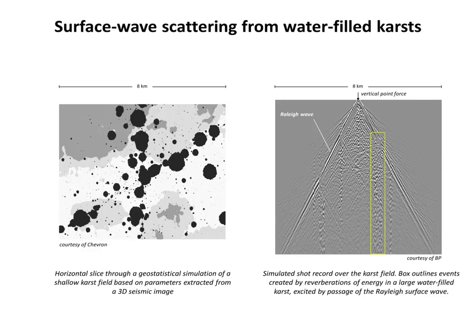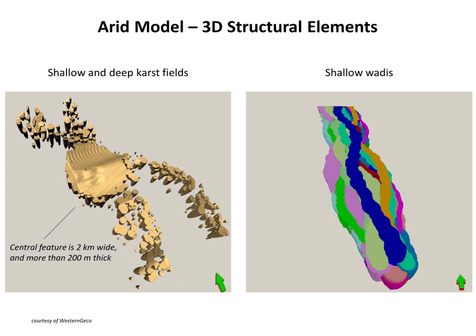The sizes, shapes, and distribution of karsts in the ARID model are based on the pattern seen in the seismic image. The ultimate goal is to simulate accurately the response of air-filled karsts to closely reproduce actual conditions encountered in desert regions. But representing voids in the subsurface is a major challenge for the current generation of seismic modeling codes. As a compromise, test simulations show karsts filled with water, as would hold in wet regions below the groundwater table. Events generated by reverberations within water-filled karst structures excited by passing surface waves begin to mimic disruptive features seen in actual surveys over shallow karsts. The near-surface ARID model is being built in collaboration between Saudi Aramco and Western GECO using the Petrel geologic modeling platform, with karst fields and buried wadis represented as geobodies.